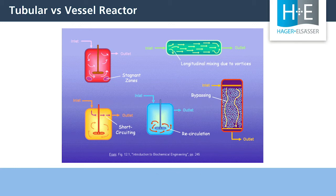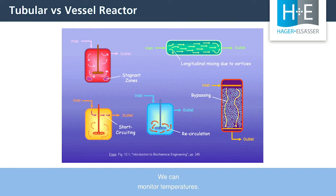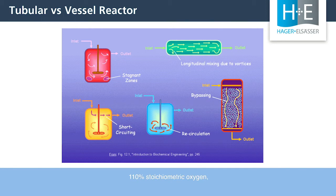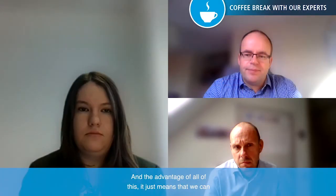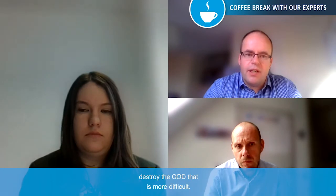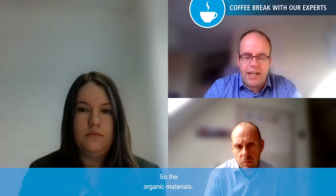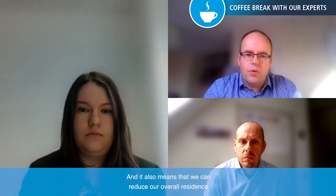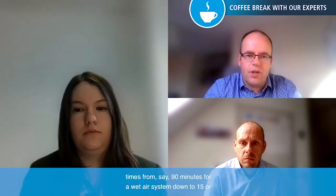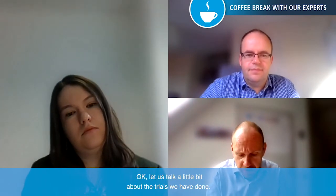The tubular reactor also allows us to break the reaction into stages. Aquacrytox allows injection of oxygen in three separate locations along the reactor, so we can optimize the oxidation process, monitor temperatures, and optimize the amount of oxygen injected. For Aquacrytox, we inject around 110% stoichiometric oxygen, whereas a conventional wet air oxidation package may use up to 300% oxygen. This means we can destroy more difficult COD compounds and reduce overall residence times from around 90 minutes for a wet air oxidation system down to 15 or even 12 minutes for Aquacrytox.